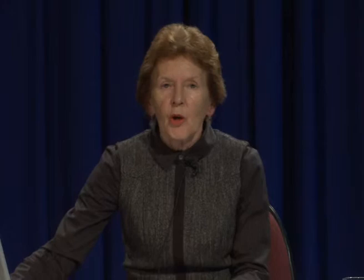We have experience with dietary diversification and modification in three projects. Two were conducted in rural Malawi: the first on children between three and seven years of age as a 12-month study, and the second on infants and toddlers aged six to 23 months as a three-month study. In both cases, these were quasi-experimental design studies. The third study was undertaken on Filipino infants and toddlers, in which we used our DDM strategies to modify the complementary feeding recipes.